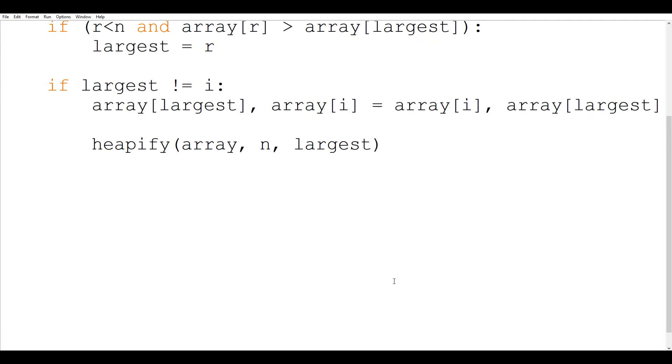So let me call it heap underscore sort, the same name that we used in the working video and it will take two arguments array and the length of the array.